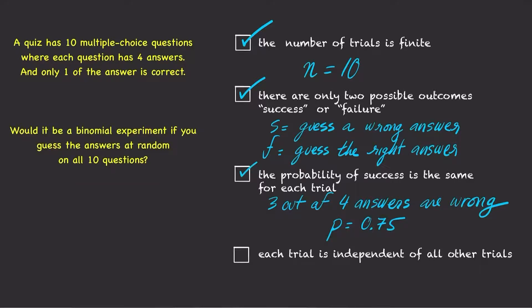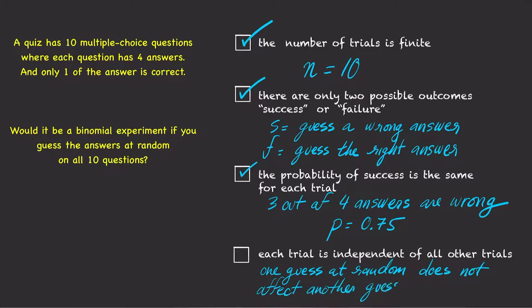And finally, the fourth condition is satisfied because each trial is independent of all other trials. Since you are guessing every answer at random, the outcome of one guess does not affect the outcome of any other guesses. This is a binomial experiment because all four binomial conditions are satisfied.